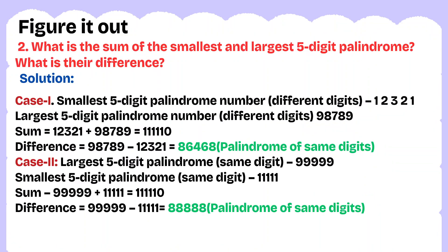Question 2: what is the sum and difference of the smallest and largest 5-digit palindromes? Case 1 with different digits: the smallest 5-digit palindrome is 12,321 and the largest is 98,789. The sum is 12,321 + 98,789 = 1,11,110. The difference between the largest and smallest is 86,468 — and this is itself a palindrome.